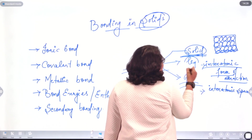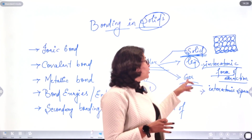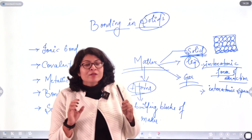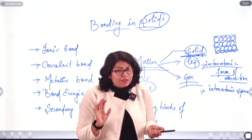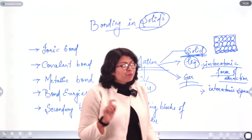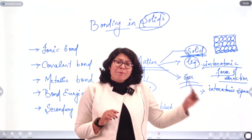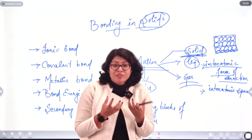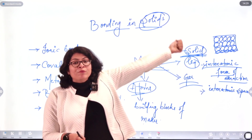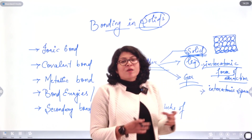Similarly, moving on to liquid — the atoms are close but a bit farther compared to solids. If you compare a pen and a glass of water, water takes the shape of whatever container it is kept in — a glass or a bottle — while the pen retains its own shape. That means compared to liquids, solids are more compact. So in case of liquid, the interatomic force of attraction is lesser than that of solid, and therefore the interatomic space is a bit more.